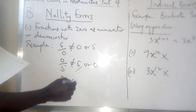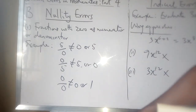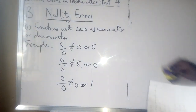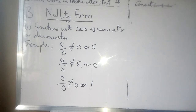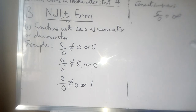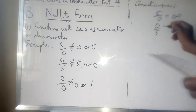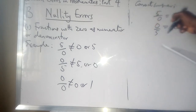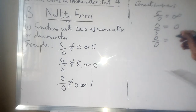0 over 0 is not equal to 0 or 1. If you commit an error here, that error is categorized as a nullity error. The correct answer for 5 all over 0 is infinity. Anytime your denominator is equal to 0, you cannot solve that — the answer will be infinity. It's undefined; we call it an undefined error. Now, 0 all over 5 is 0. 5 all over 0 is infinity. And 0 over 0 is not 1 and is not 0 — it is also equal to infinity.